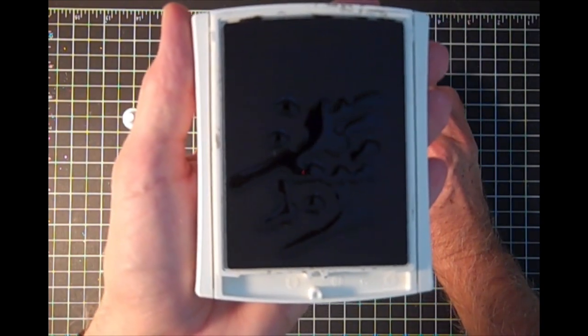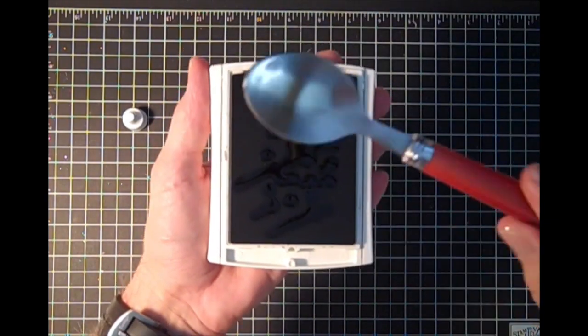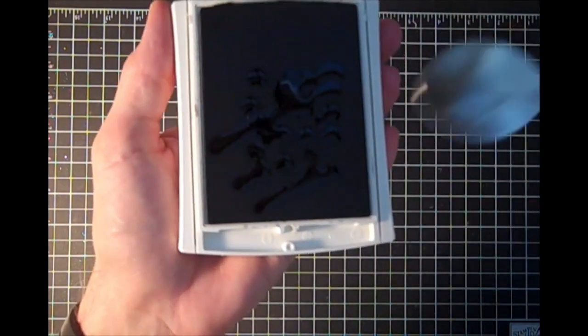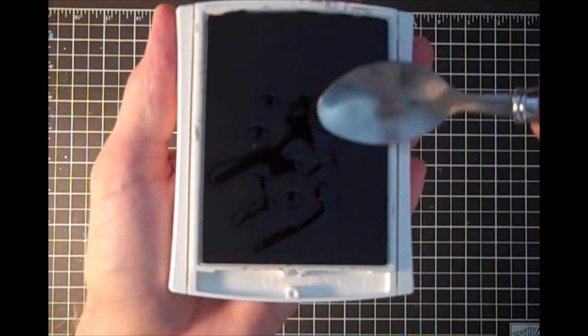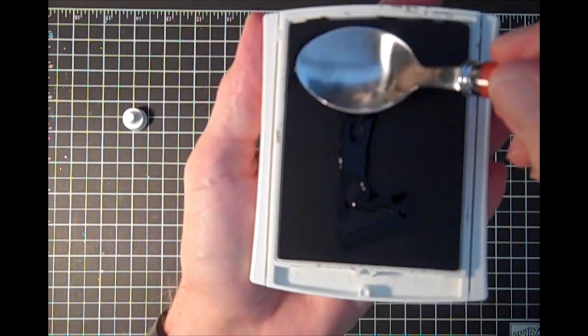So I bought a very expensive tool at a second-hand store. It's called a spoon, it was 10 cents, and it is a great tool for getting your ink to absorb into the surface because as you'll notice as I'm pressing on this pad and I'm hoping the light is catching this, it's depressing the pad.